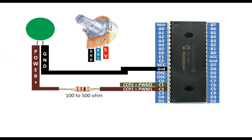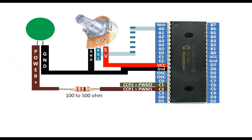To connect the potentiometer with the PIC, connect ground directly with the common ground of the circuit. The 5V pin will go to the VCC pin — that is the 5V of the PIC. The center pin, that is the adjustable pin, can connect to any available ADC pin of the PIC. I am going to use pin number A0, that is pin number 2 of the PIC16F877A microcontroller.